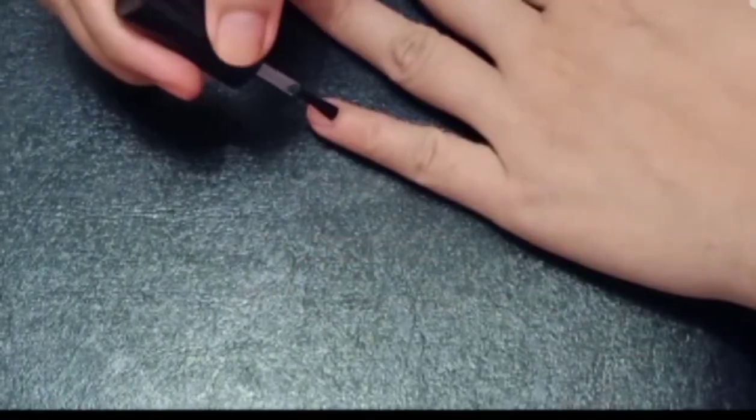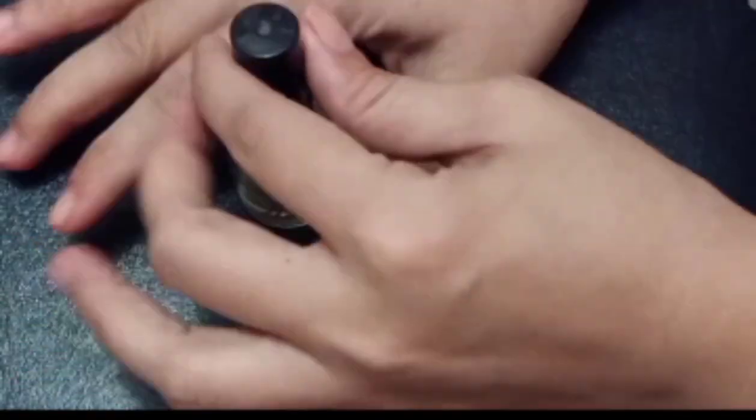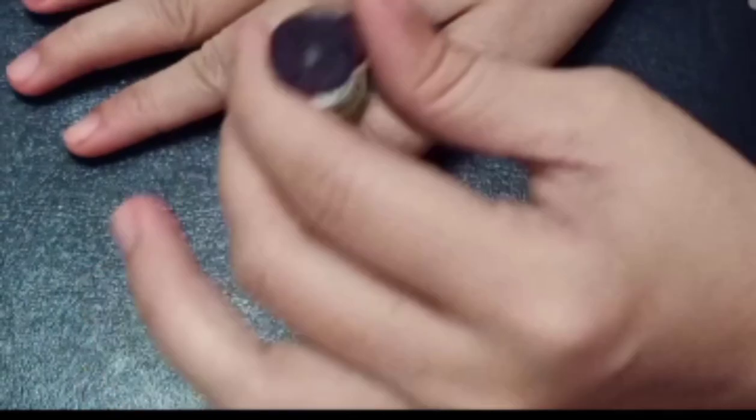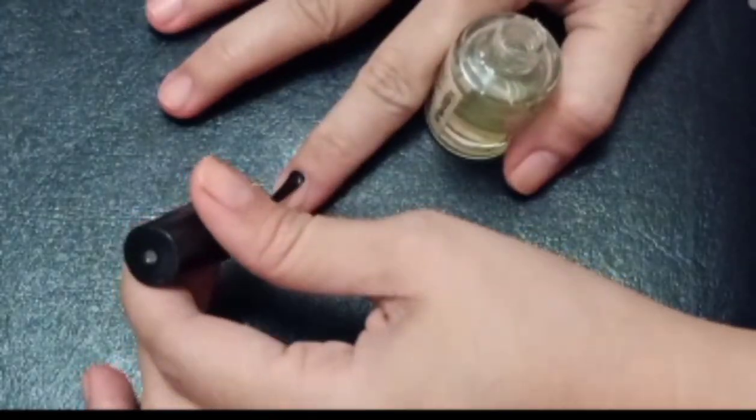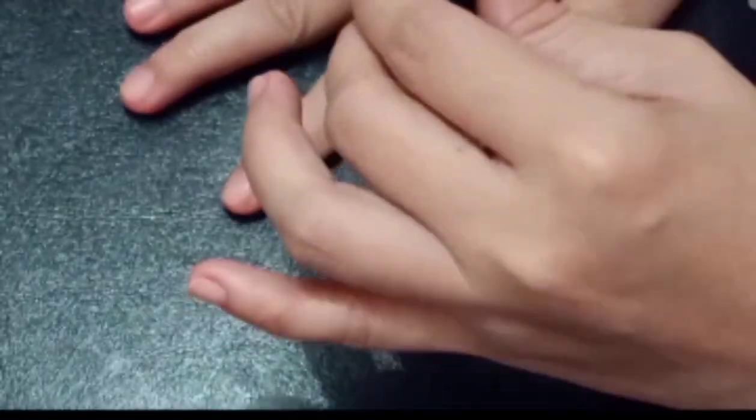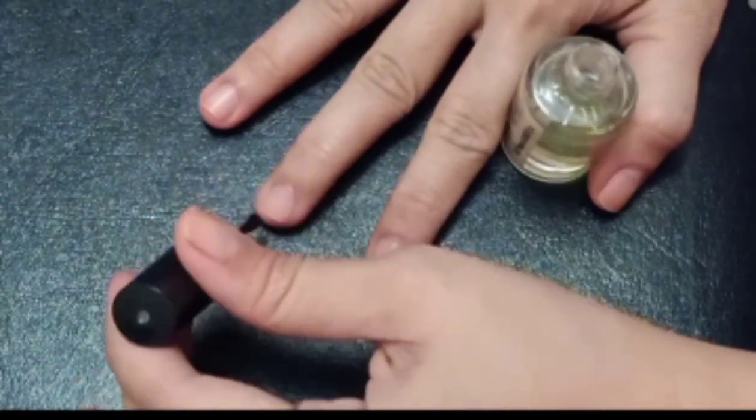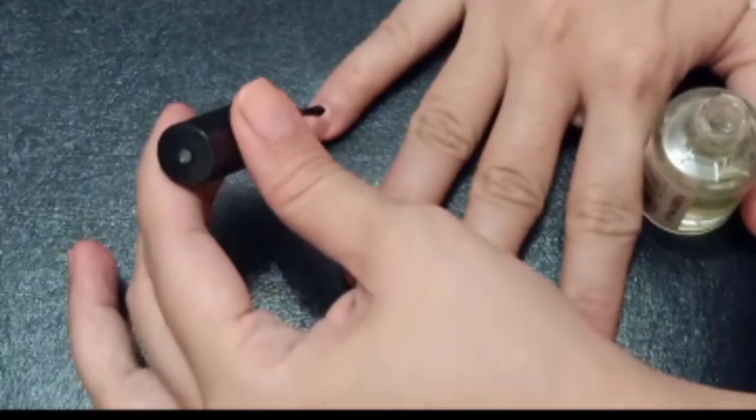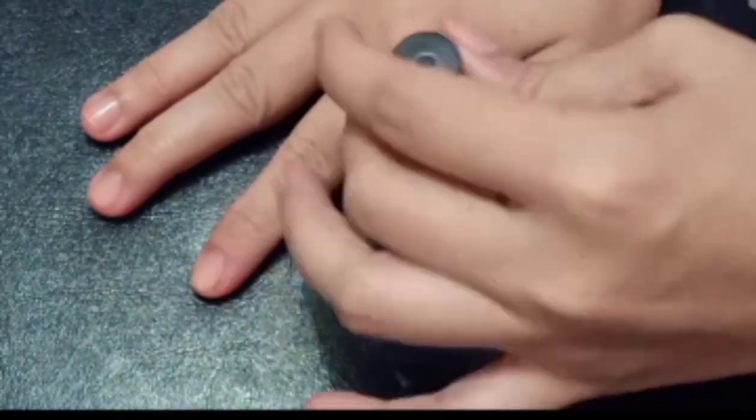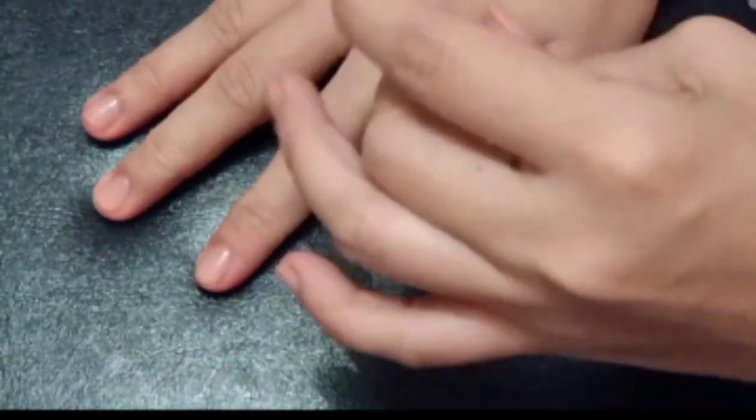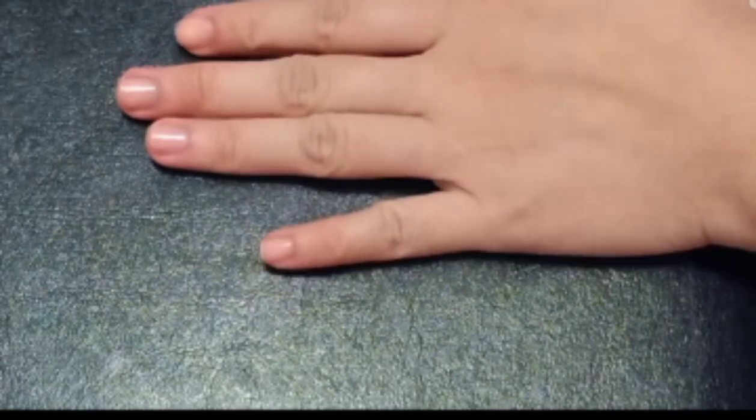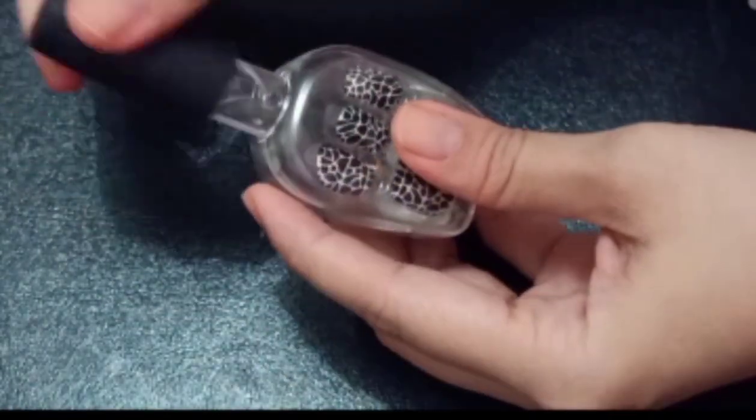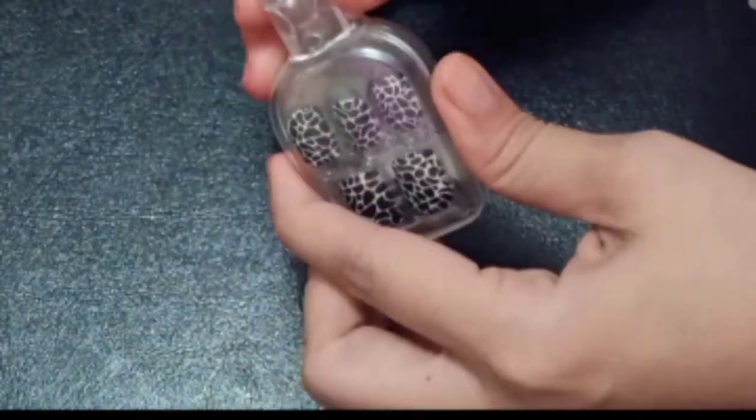Apply the clear nail polish and wait for it to dry so that the press-on nails later on will stick better. So we just have to wait and let it dry. Now we're getting our press-on nails.